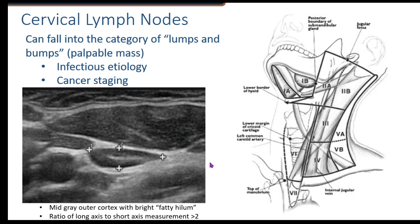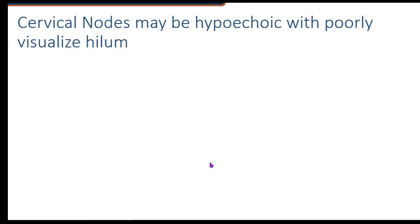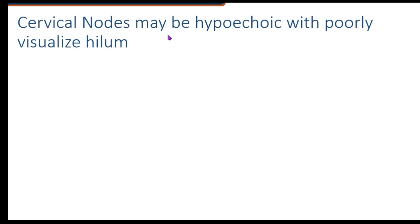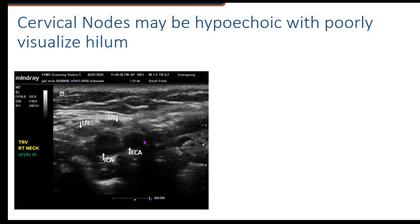When lymph nodes become reactive or have been infiltrated with cancer, they begin to get a more rounded or more lobular appearance. I want to caution you that cervical nodes may just appear as hypechoic, almost like little jelly beans. As you're moving up and down the neurovascular bundle with your probe, you'll see this little rounded structure come into view, pass by, and go out of view, then the next one comes into view because they're in chains. You may or may not be able to visualize the hilum.